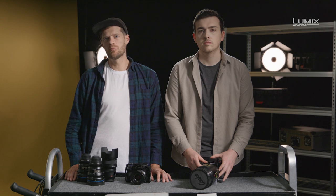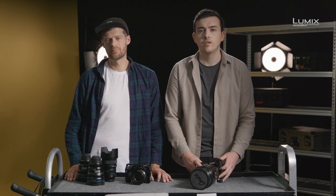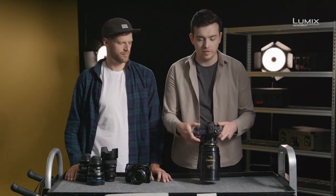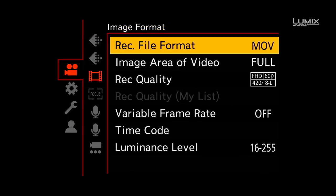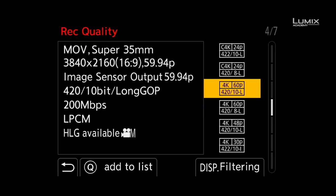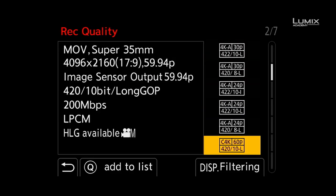Getting started with shooting anamorphic on the S1H is very easy. The first step is to select an anamorphic shooting mode. Simply navigate to the recording quality menu in the video menu, under the sub menu image format. Under recording quality you can find a number of anamorphic options labeled Anamorph. This will give you a 4x3 Super 35 filming option, designed for shooting with anamorphic lenses with a squeeze ratio of more than 1.5. If you're shooting with something less than 1.5, such as a 1.33 or 1.3 anamorphic, you can select a standard 16:9 aspect ratio recording option.